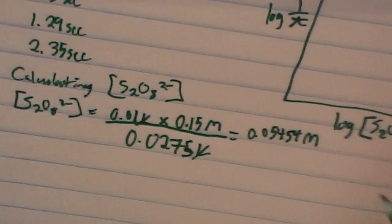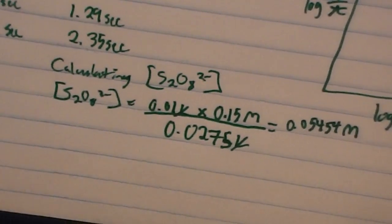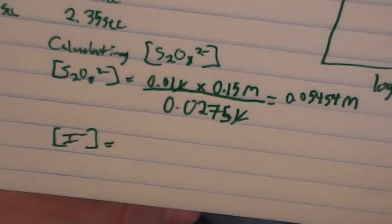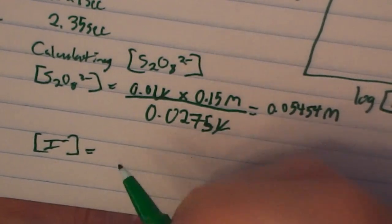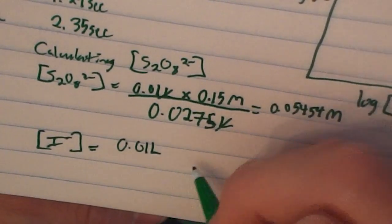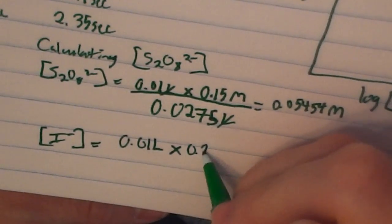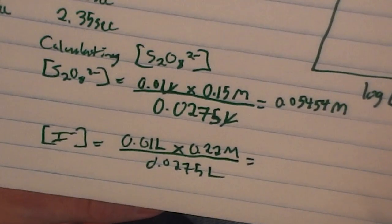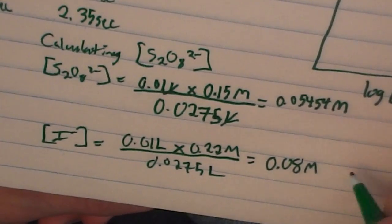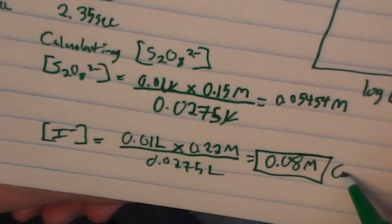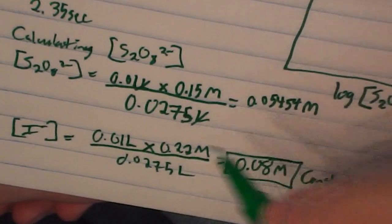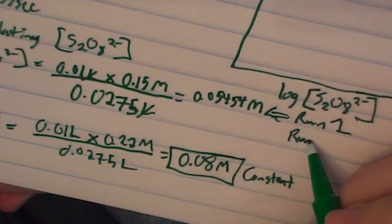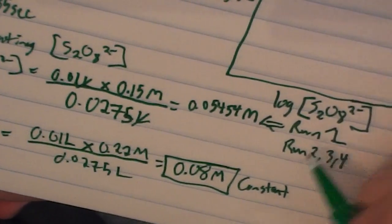For iodide, the concentration stays constant because it's in beaker two, so you only need to calculate it once. Use 10 mL of 0.22 M iodide: 0.01 L × 0.22 M ÷ 0.0275 L = 0.08 M. Remember that iodide concentration is constant and does not change. The persulfate concentration example above was for run one — you'll need to calculate the persulfate concentration for runs two, three, and four.